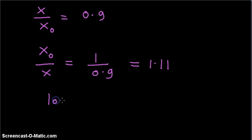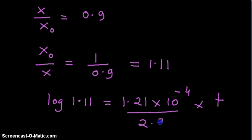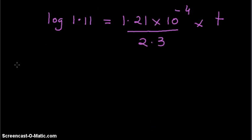Hence log 1.11 is equal to, substituting the value of k, 1.21 times 10 raised to minus 4 times t divided by 2.3. Log 1.11 is equal to 0.05.